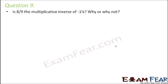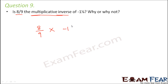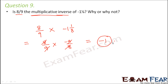Question 9: Is 8/9 the multiplicative inverse of -1⅛? If it is the multiplicative inverse, then when these two numbers are multiplied the result should be 1. So let us calculate: 8/9 multiplied by -1⅛. Converting -1⅛ gives -9/8. The 8s cancel and the 9s cancel, giving a result of -1, which is not equal to 1.